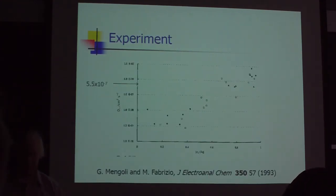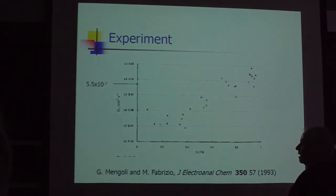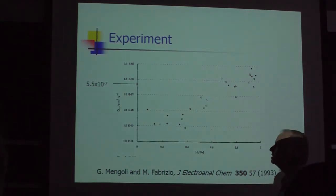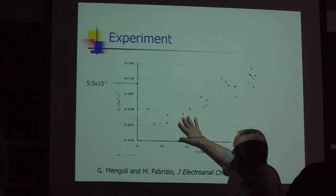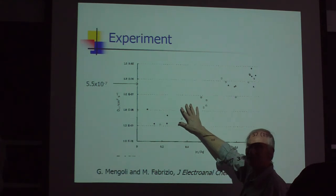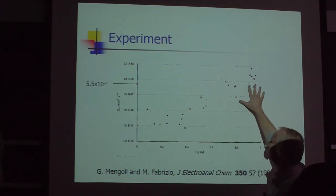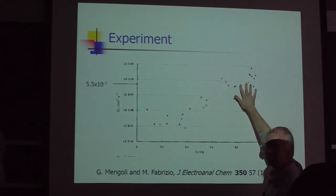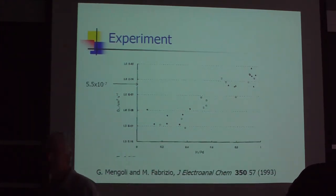There's an experiment by Mencoli and Fabrizio where they measured the diffusion coefficient in palladium hydride. So here's the textbook value, and in the miscibility gap region the diffusion coefficient seems to be low, a lot different than the alpha phase textbook value, whereas in the beta phase there's a very high number, and these high numbers are closer to the Baranowski type values.